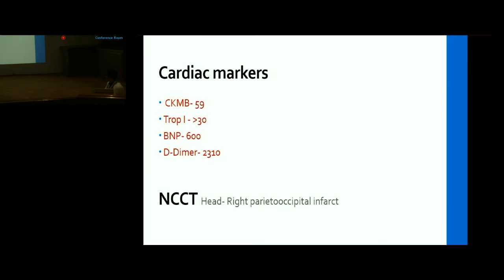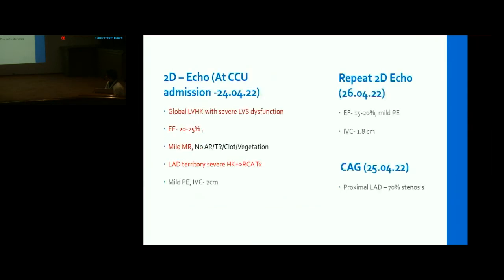2D echo on admission to CCU showed global left ventricular hypokinesia with severe LV systolic dysfunction, ejection fraction of 20-25%, mild MR, LAD territory severe hypokinesia more than RCA territory, with no air, tear, clot, or vegetation. Repeat echo on 26th April showed EF of 15-20% with mild pericardial effusion and IVC of 1.8 cm.